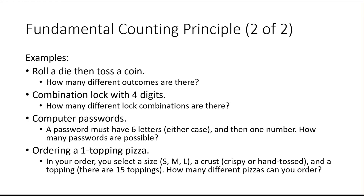If you're ordering a pizza and you can have small, medium, or large, a crispy or hand-tossed crust, and there are 15 different toppings — how many different pizzas can you get if you're choosing just one topping? You'd have 3 choices for the size times 2 choices for the crust times 15 choices for the topping, so it would be whatever 3 × 2 × 15 equals.